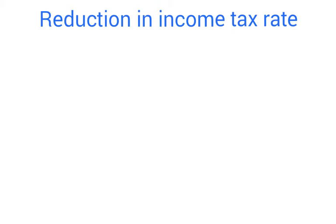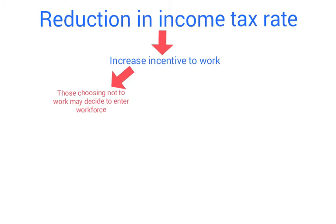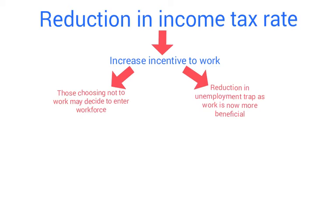One of the main supply-side policies the government can adopt — one that overlaps with fiscal policy — is reducing income tax rates to provide an incentive for people to go into work. The analysis chain goes like this: a reduction in income tax rates will increase the incentive to work, because people get to keep more of their earned income. People who had chosen not to work may re-enter the workforce, and those earning benefits may decide the higher take-home pay incentivises them to return to work.